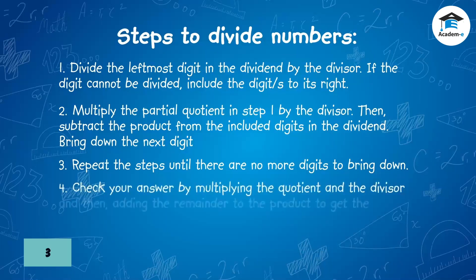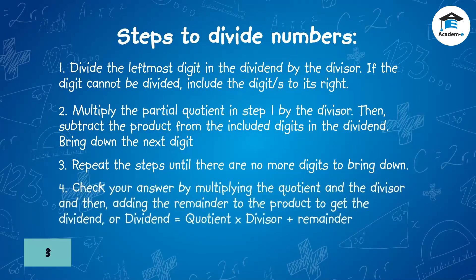Four: check your answer by multiplying the quotient and the divisor and then adding the remainder to the product to get the dividend. That is: dividend equals quotient times divisor plus remainder.